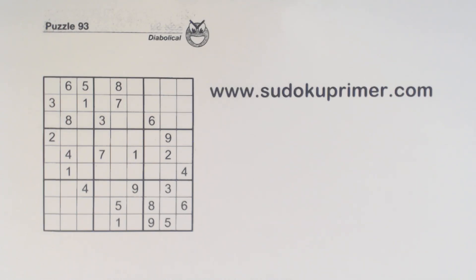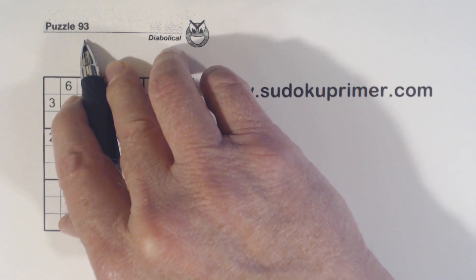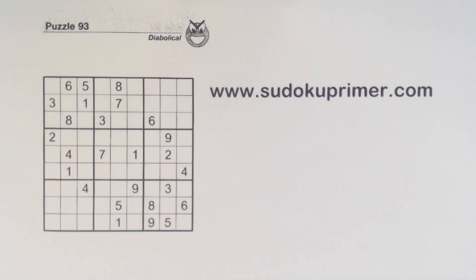In this video we will talk about a concept of unrelated numbers that can produce twins. We'll also use advanced patterns and techniques to make this diabolical puzzle pretty easy. As I solve this puzzle I'll point out the different techniques and patterns used. This is puzzle number 93 from Sudoku2Go volume 139.